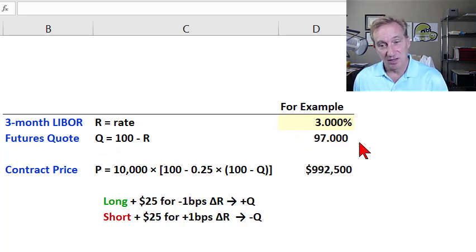We don't see the LIBOR of 3%, we see the 97. But we could just take the calculation: 100 minus 97 is an anticipation or prediction of a future three-month LIBOR equal to 3%.